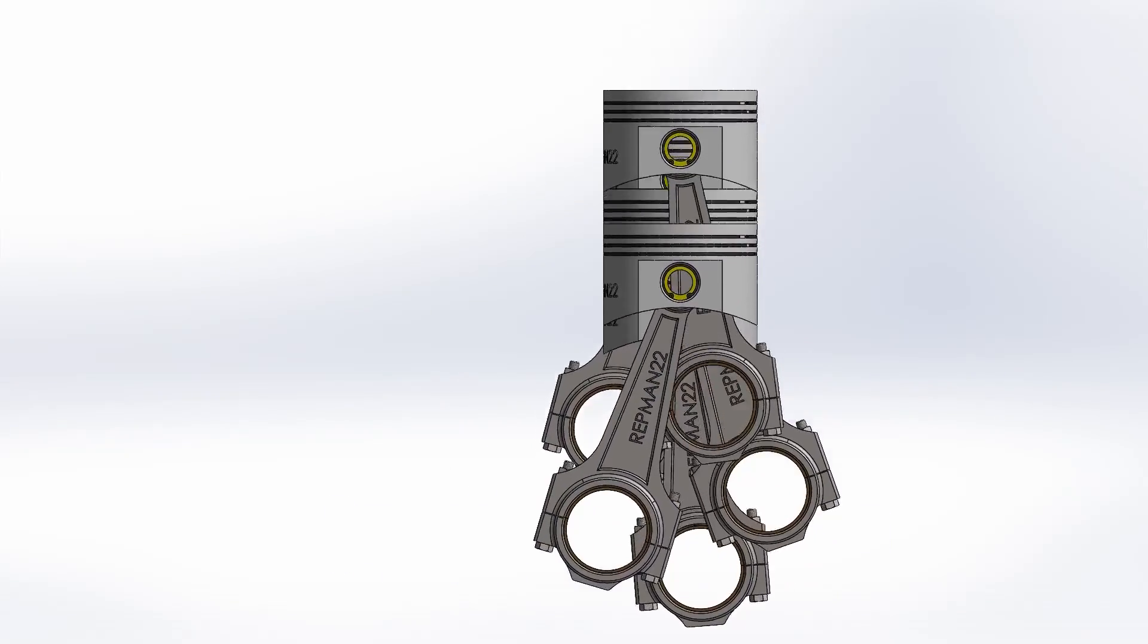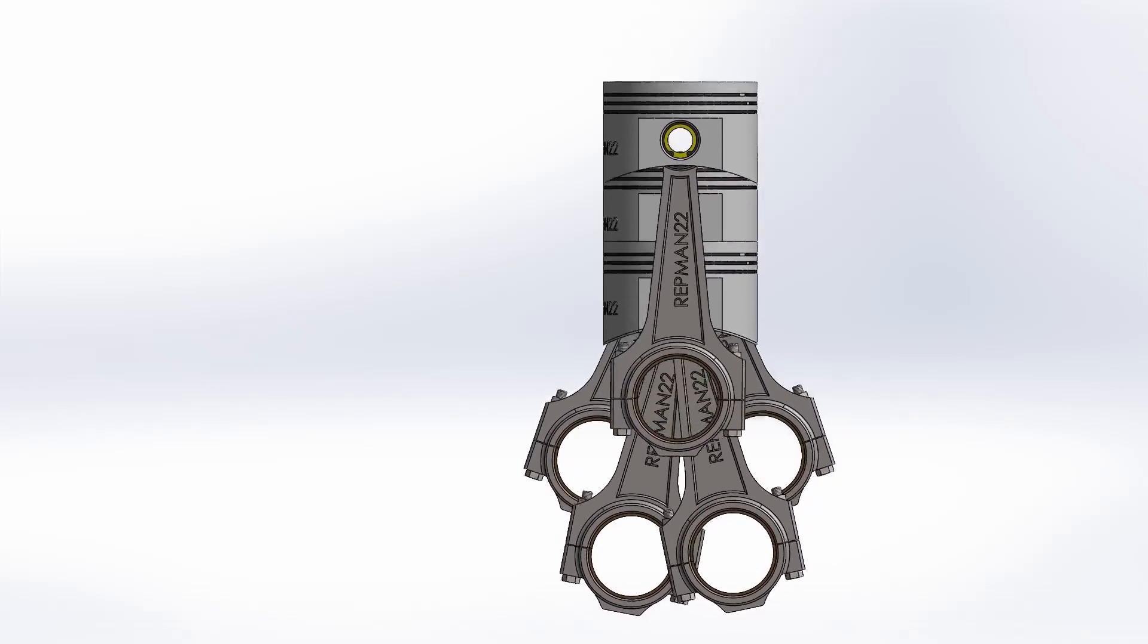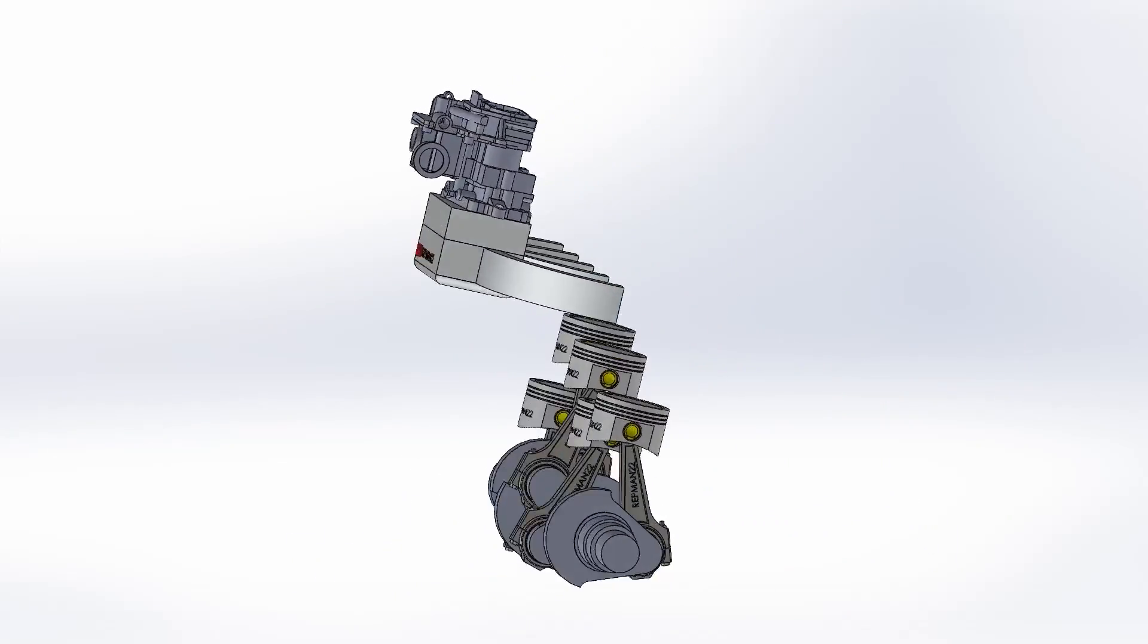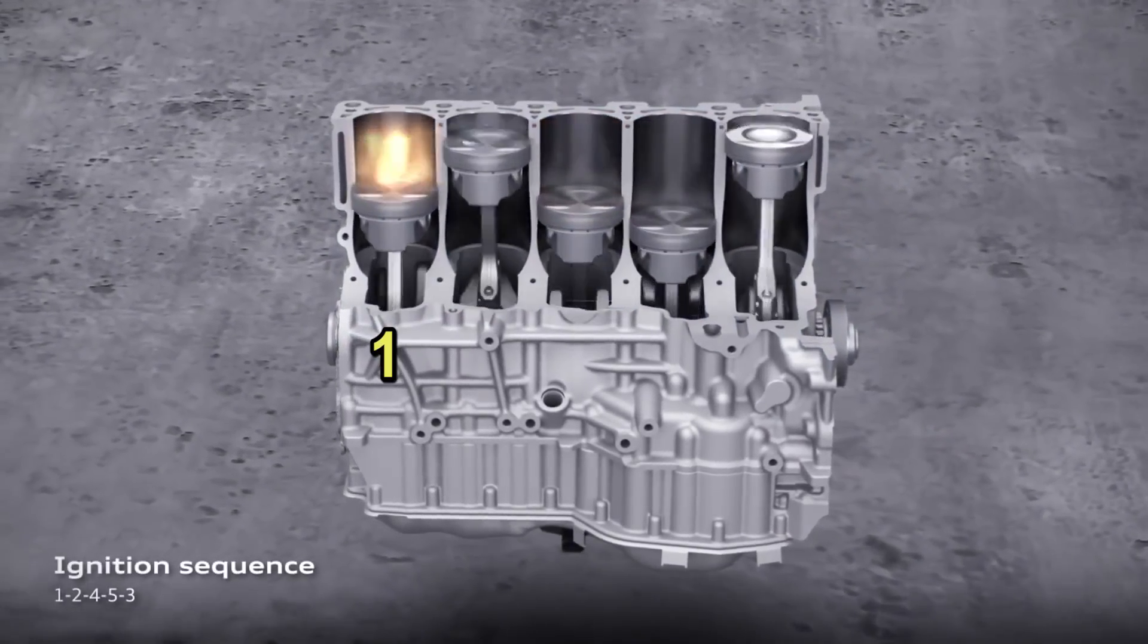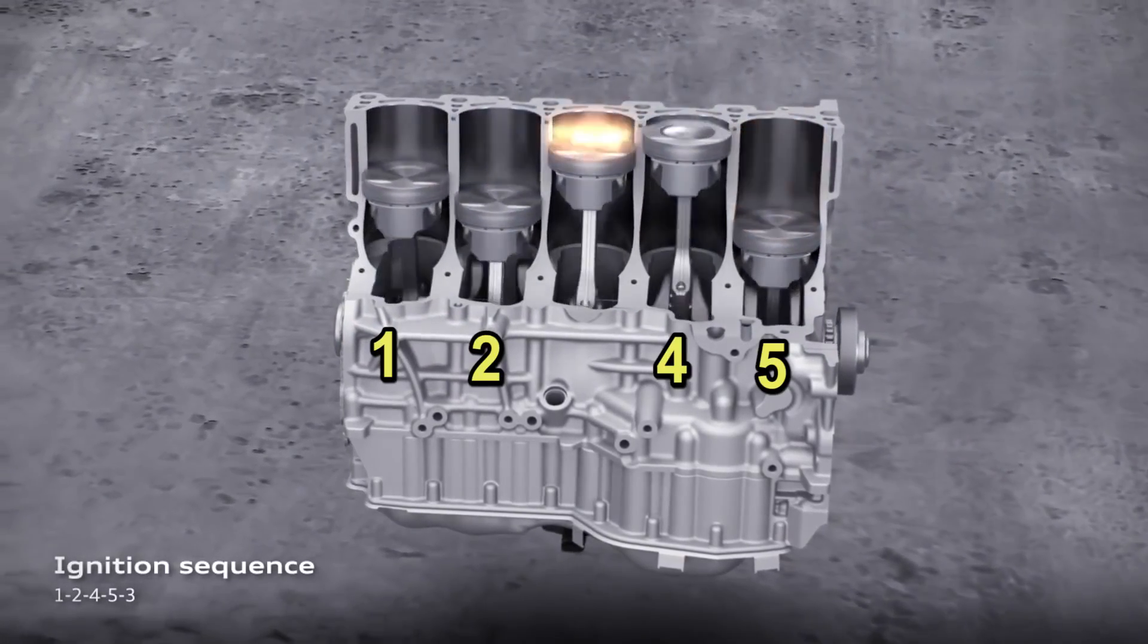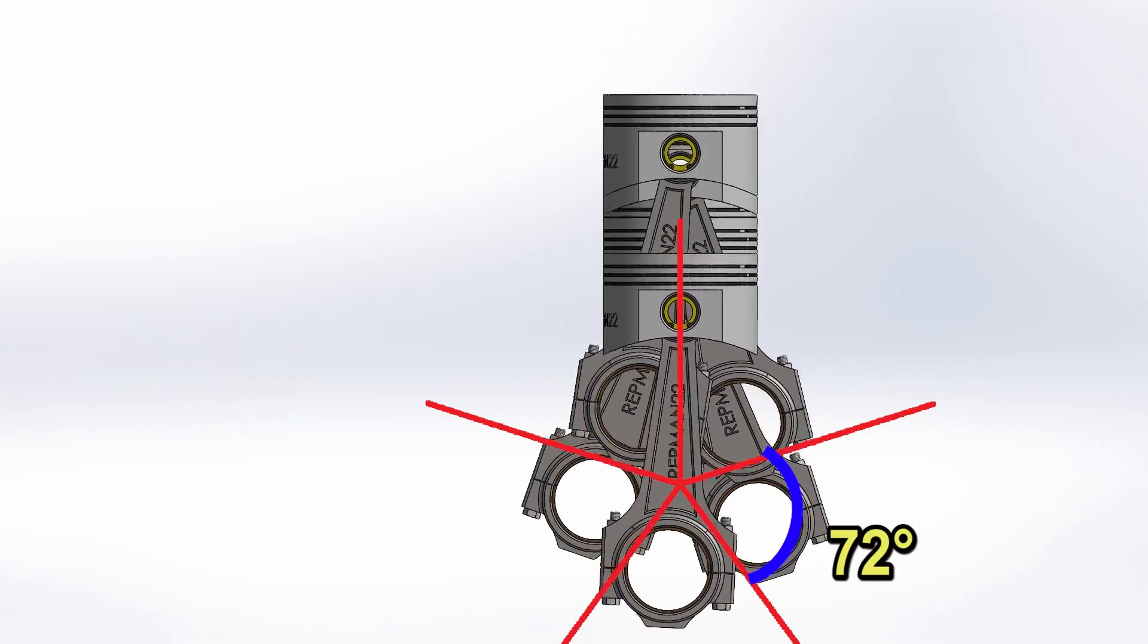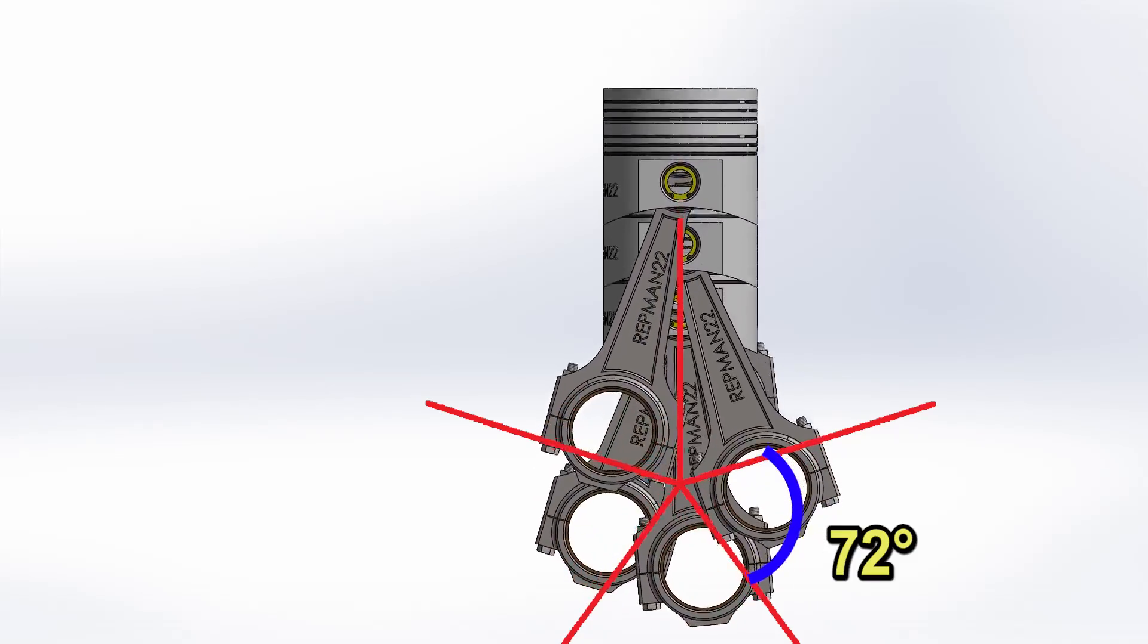Every 144 degrees of rotation, there's a combustion stroke, which means that there's always more than one cylinder powering the crankshaft at the same time, giving an even and constant power delivery. But also, two cylinders are aspirating air at the same time. Its firing order is 1, 2, 4, 5, 3. Its crankshaft has connecting rod journals distributed every 72 degrees. Anyway, this gives it a very beautiful and peculiar sound.